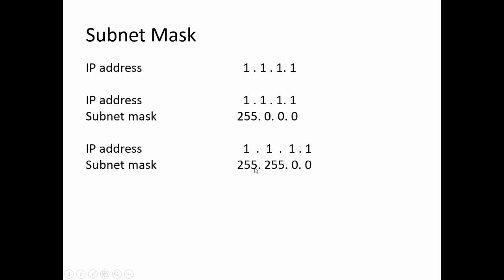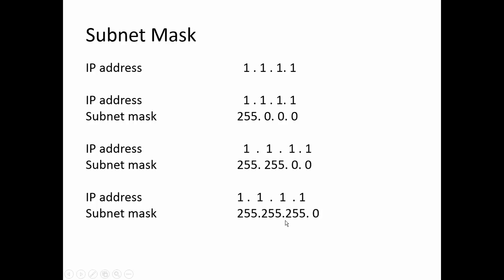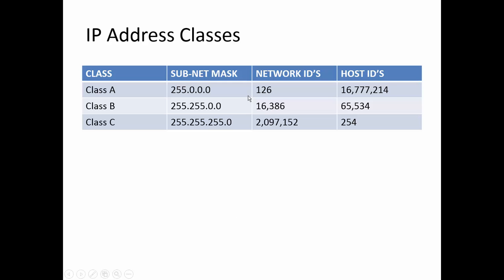A class B subnet mask indicates that the IP address 1.1.1.1 is workstation 1.1 on network 1.1. A class C subnet mask indicates it is workstation 1 on network 1.1.1. So these three interpretations yield three separate IP addresses. The subnet mask tells us which part of the IP address is network ID and which part is host ID, and there are three classes of subnet mask: class A, class B, and class C.